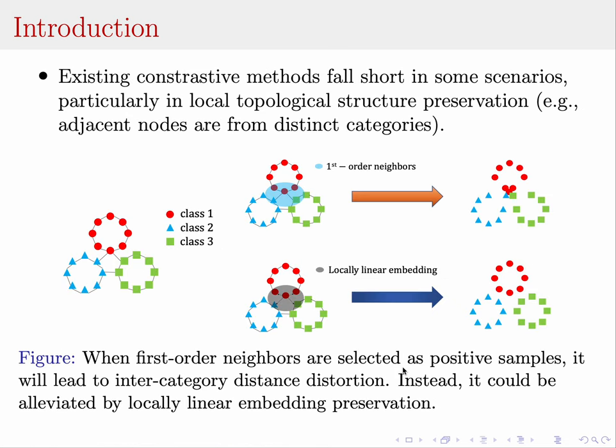But existing contrastive methods are not good at this. For example, taking first-order neighbors as positive samples will lead to intercategory distortion. Instead, this could be alleviated by local topology preservation methods.